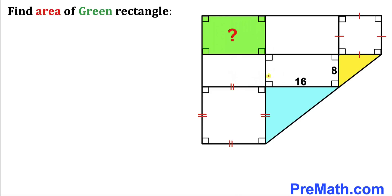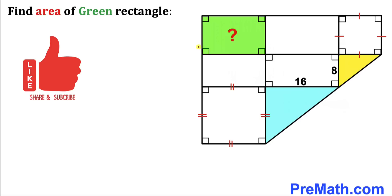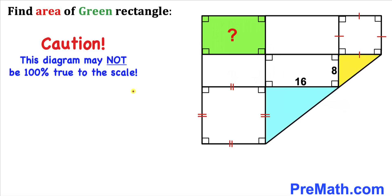Welcome to pre-math. In this video we have got this interesting shape, as you can see in this diagram, such that we have two squares. Moreover, the side lengths for this rectangle are 8 and 16 units, and now we are going to calculate the area of this green shaded rectangle. Please don't forget to give a thumbs up and subscribe. Before we proceed any further, let me make it very clear that this figure may not be 100% true to the scale.